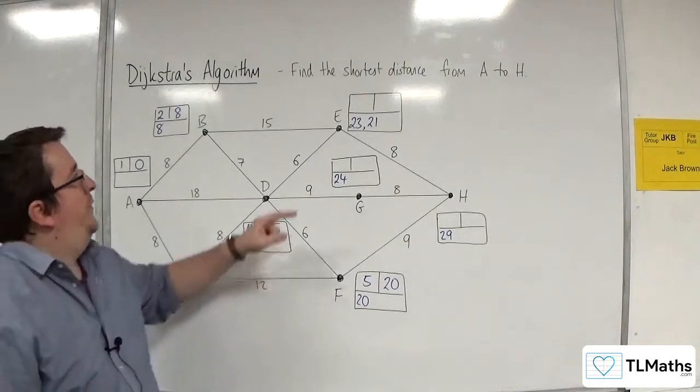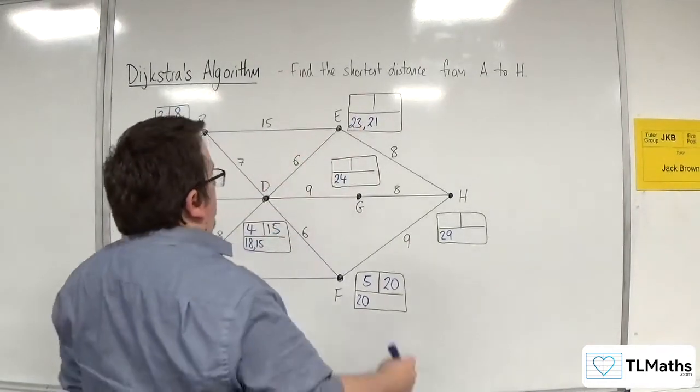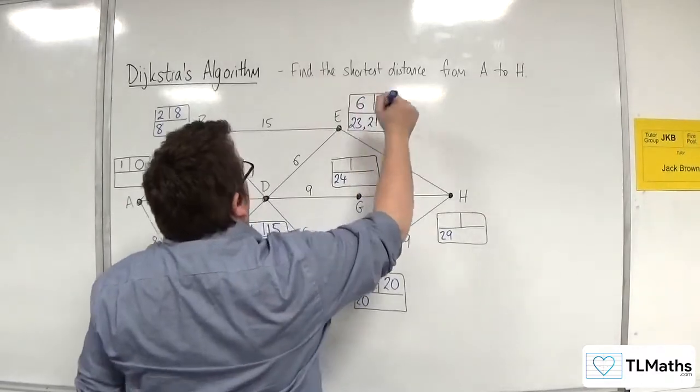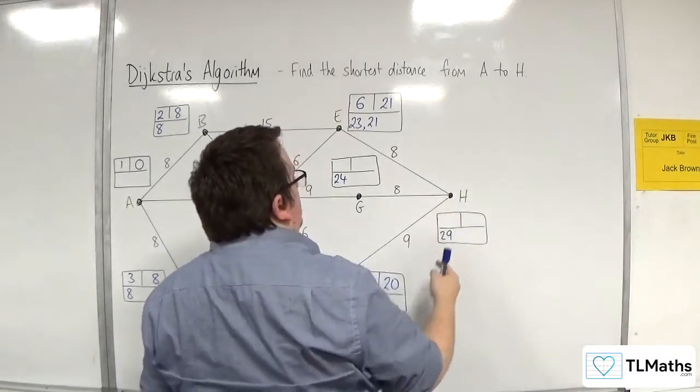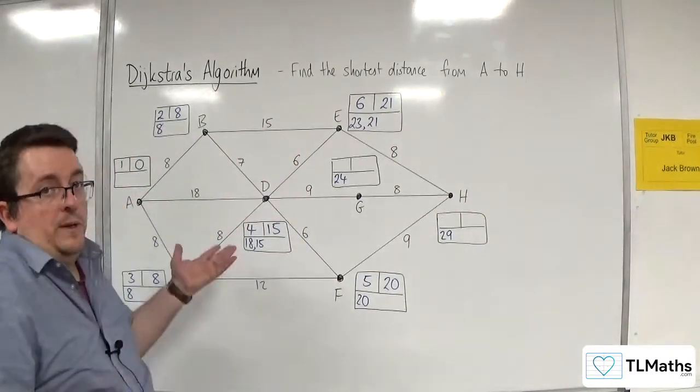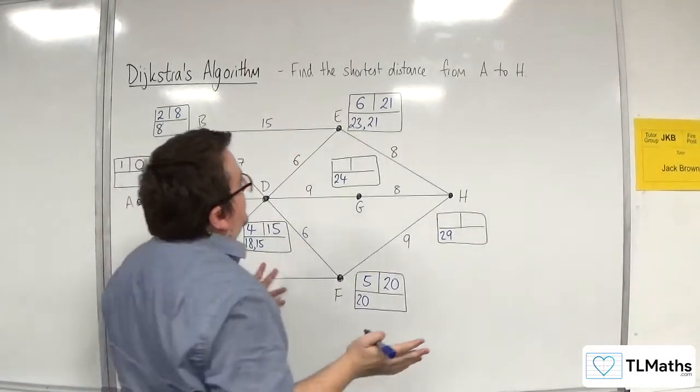So the next shortest is E, so E gets picked next, and 21 gets put in the final value box. 21 plus 8 is 29, okay, so that's not better than the 29 I already have there, so I don't write anything down.